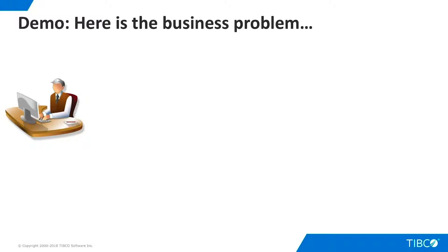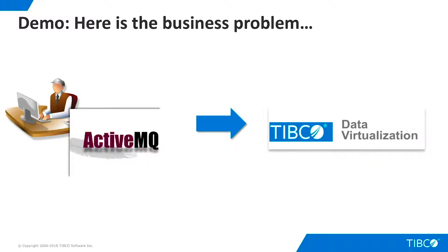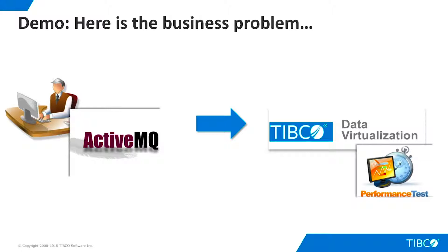Here is the business problem we illustrate in this demo. A system administrator for a large enterprise is building a general purpose performance monitoring portal for all enterprise systems. He uses ActiveMQ, a JMS implementation, to publish messages to many systems, including TDV. The messaged TDV requests current performance information on a specific TDV resource named in the message. When TDV receives the JMS message, it fires a trigger that executes a stored procedure that runs a performance test on the specified resource, then replies by publishing a JMS message containing the performance data.